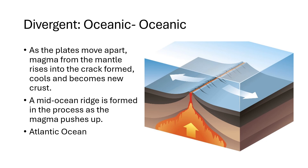As the plates pull apart, an opening is created, magma rises and cools when it hits the ocean, becoming new crust. What we see formed here is the mid-ocean ridge — it forms as the magma pushes up. It is not a mountain range; it's more of a hill-type feature under the ocean. An example of this is in the middle of the Atlantic Ocean, where two plates are moving apart.